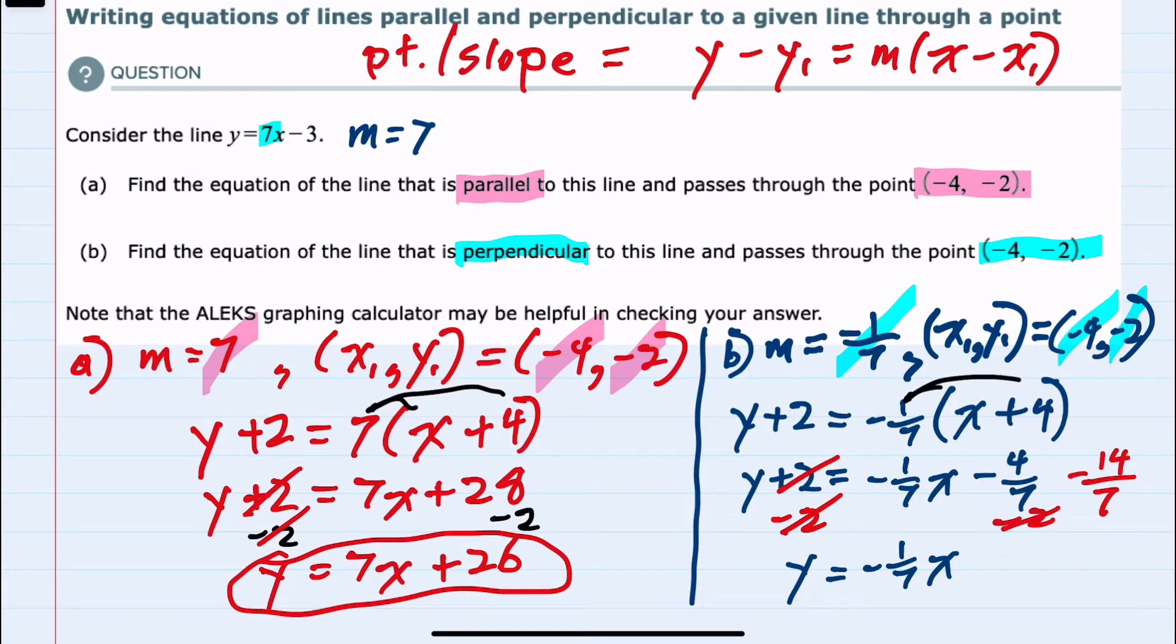Now having a common denominator, I can combine these terms to negative 18/7, and this would be the equation of the line.